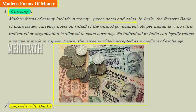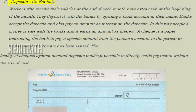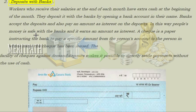Another modern form of money is deposits with banks. Workers who receive their salaries at the end of each month have extra cash at the beginning of the month and deposit it with the bank by opening a bank account. Banks accept these deposits and also pay an amount as interest, so people's money is safe with the bank and it earns interest.